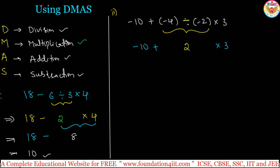Next rule is multiplication. According to the multiplication, 2 into 3, 2 into 3 is 6. Now this is minus 10 plus 6. Just by doing one one operation, we are removing that.